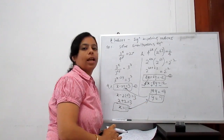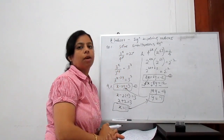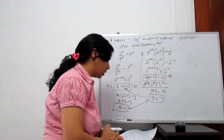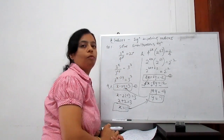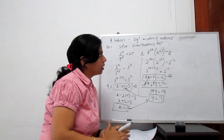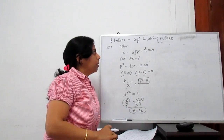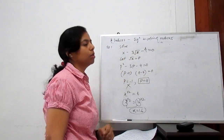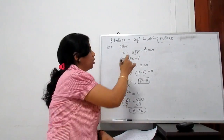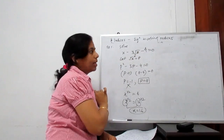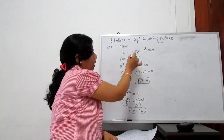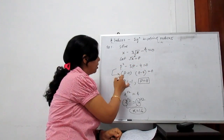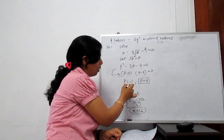Hence we get both solutions: x equals 1 and y equals minus 1 for the given simultaneous equations in indices form. One last example involving the substitution method. The equation is x minus 3 root x minus 4 equals 0. Let root x equal to p, so x equals p squared. The equation becomes p squared minus 3p minus 4 equals 0.